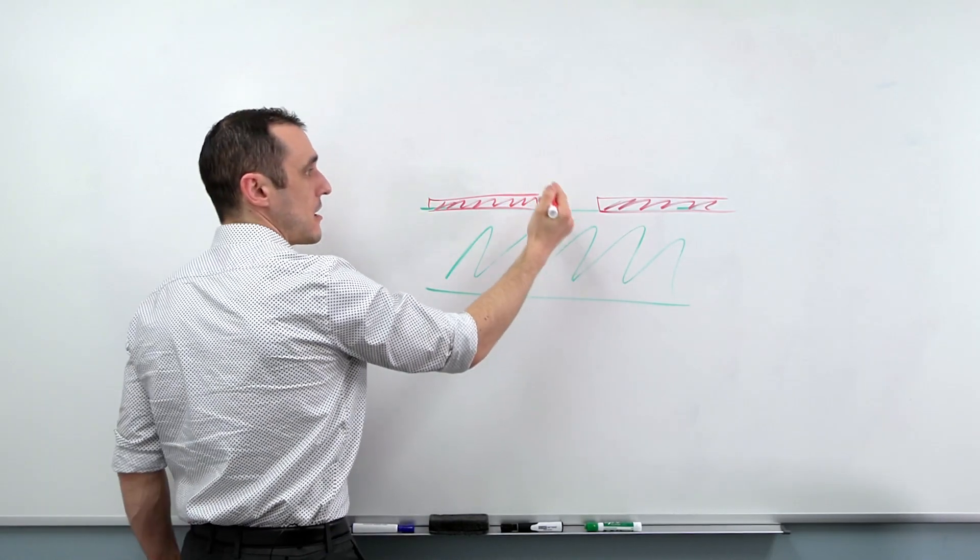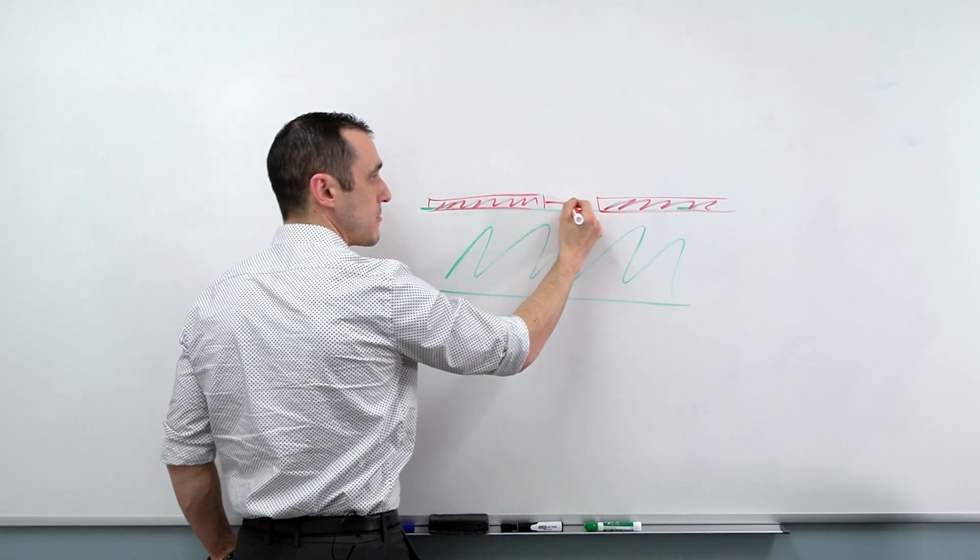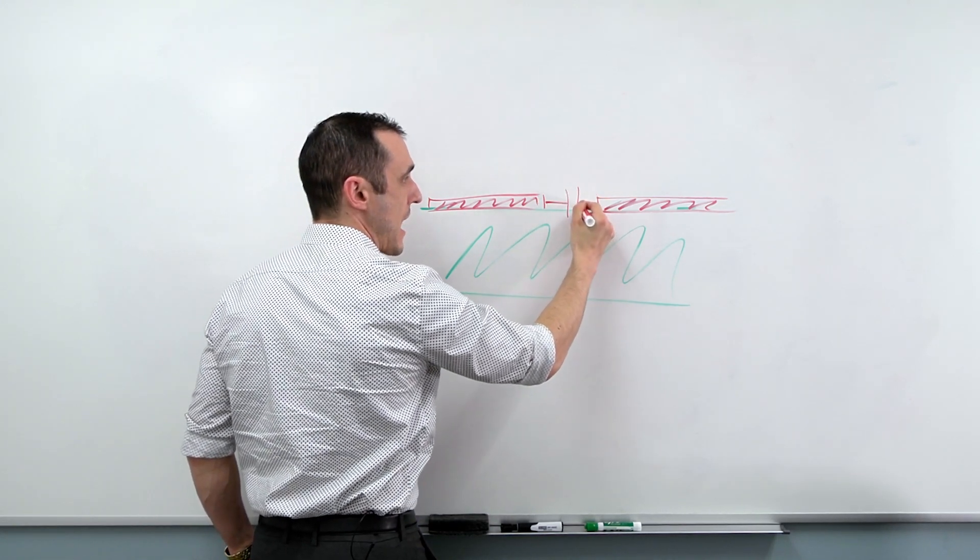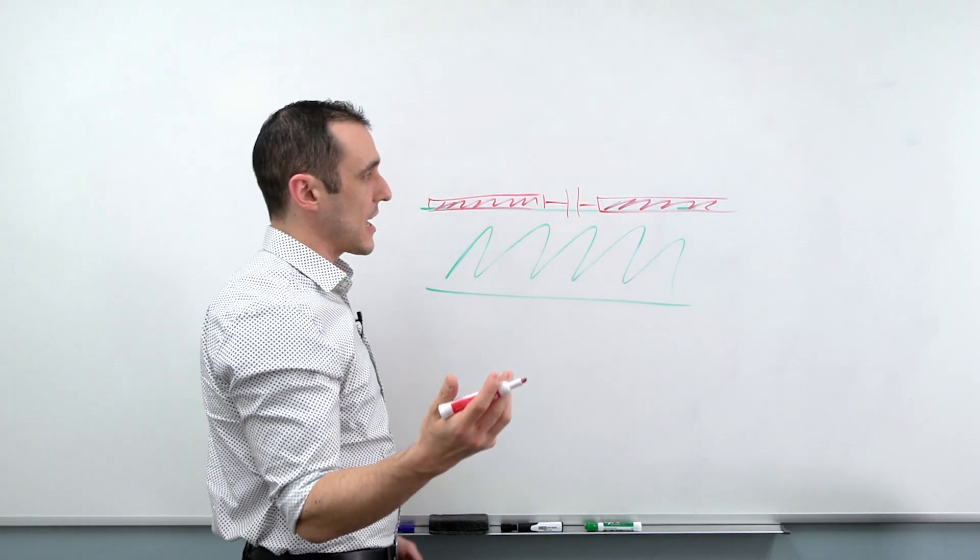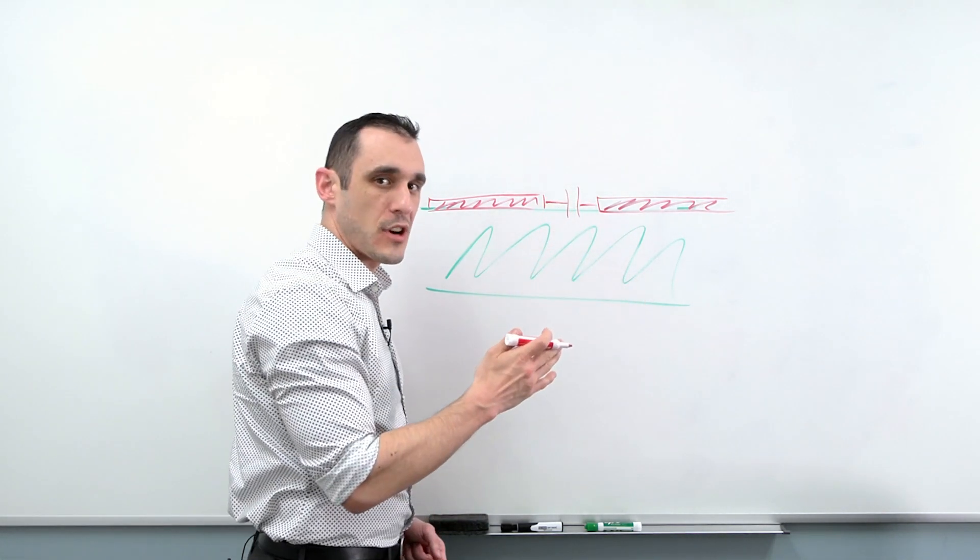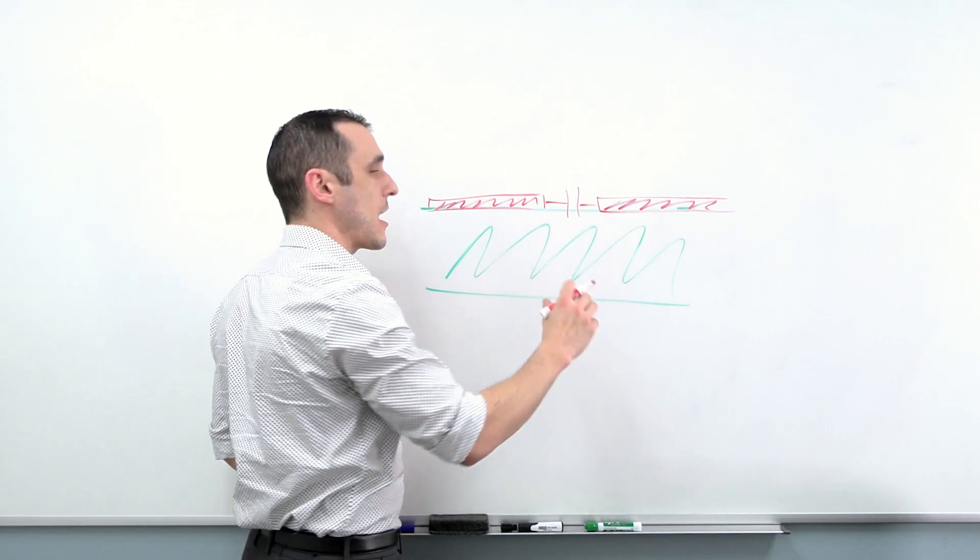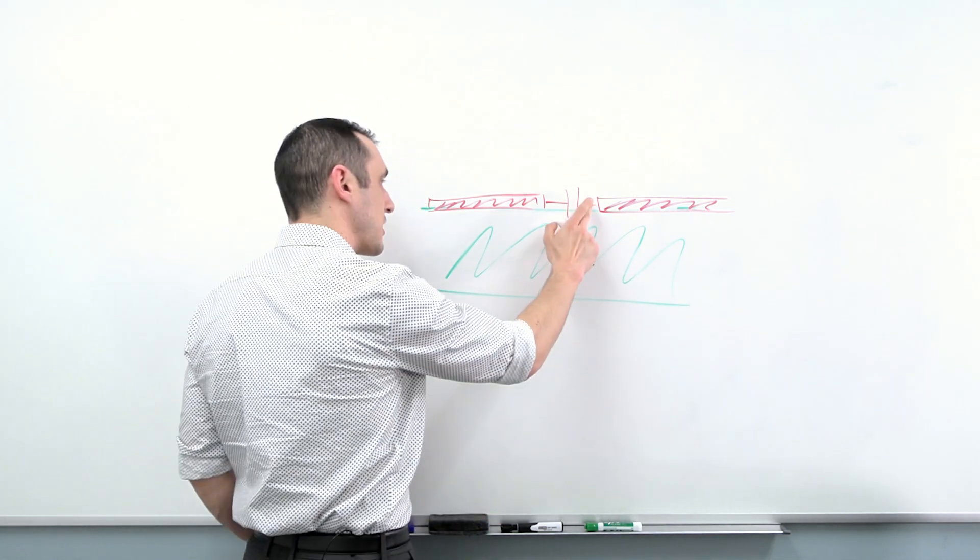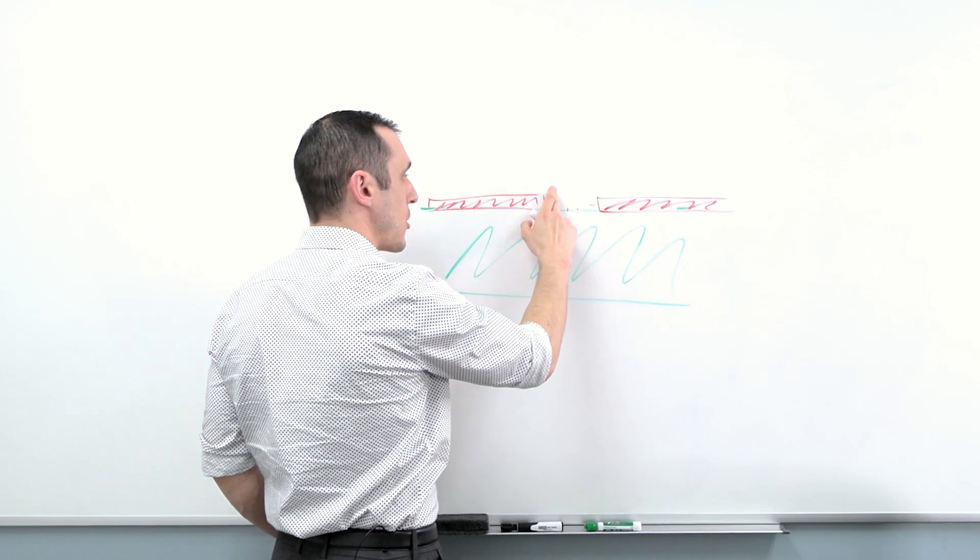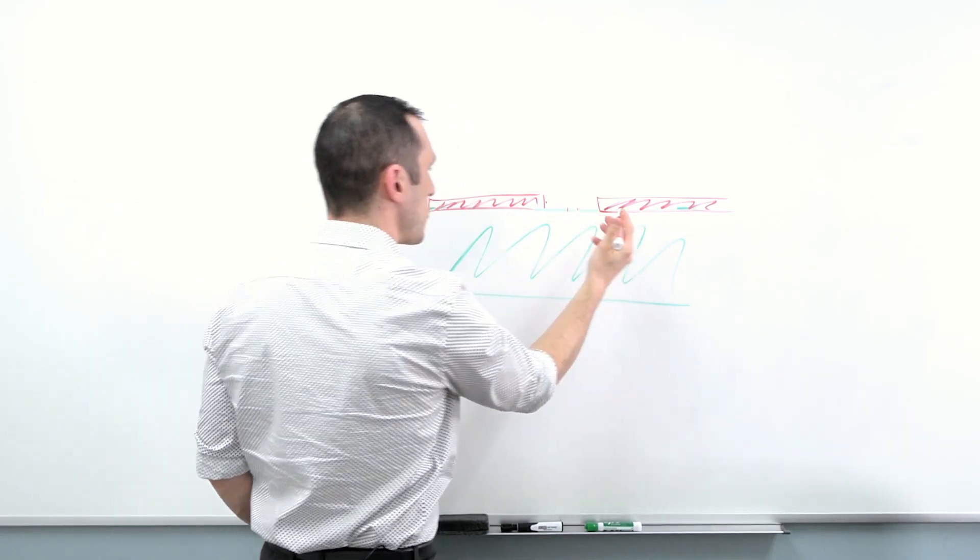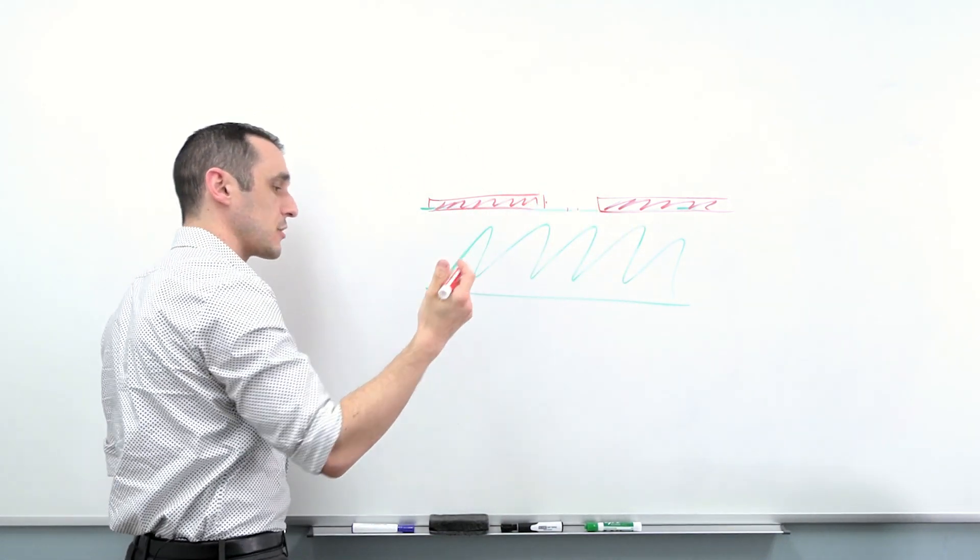Whenever there are two conductors separated by some dielectric, we have some capacitance between them. Now sometimes if you look at some diagrams, you'll actually see a capacitor drawn like this between these two sections of copper. It does not mean that there is a literal capacitor there. However, we basically formed a small capacitor here between these two sections of conductor.